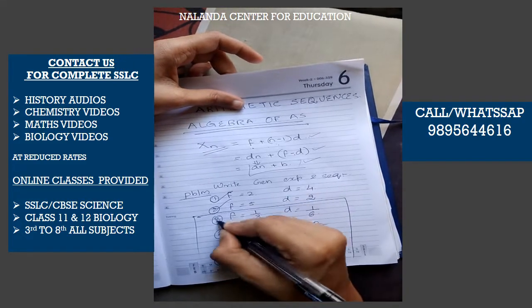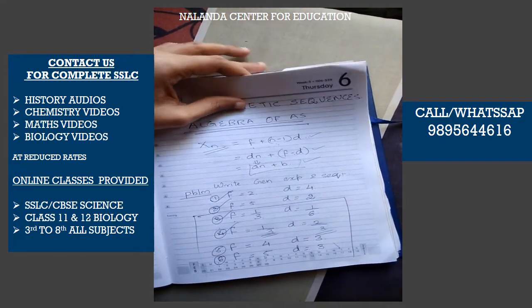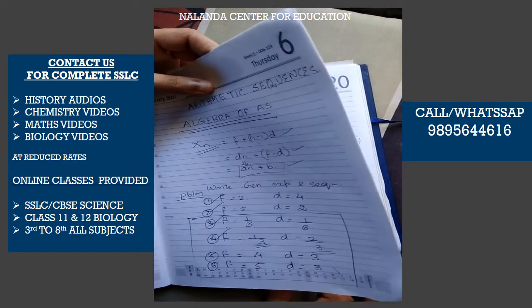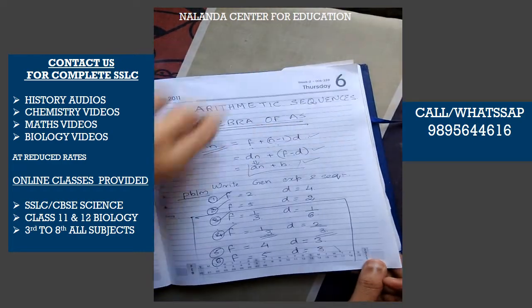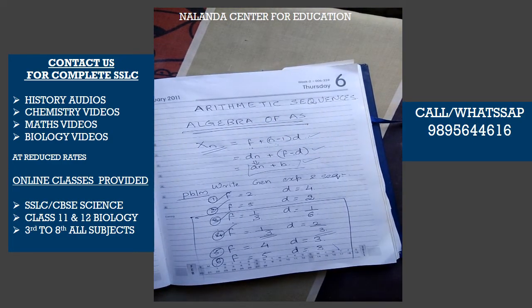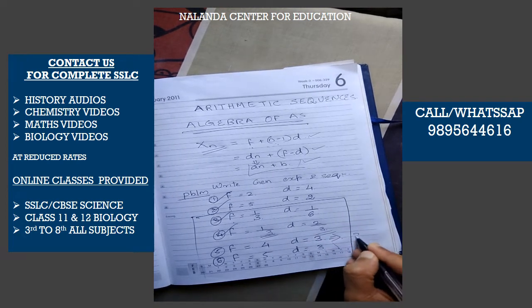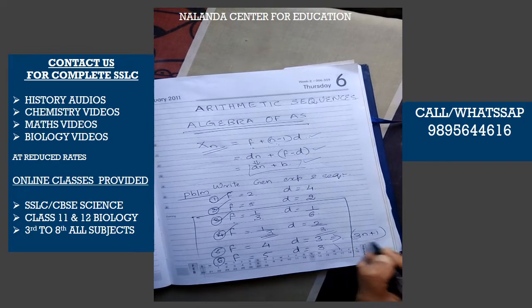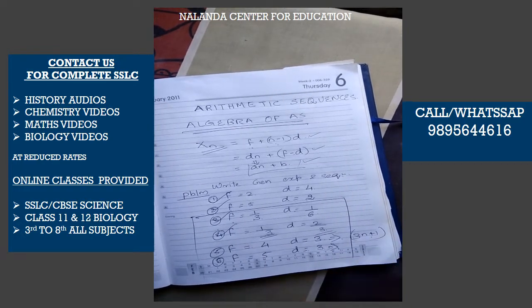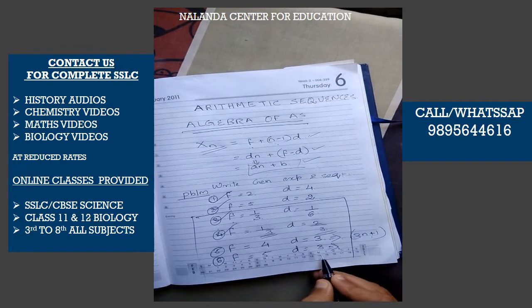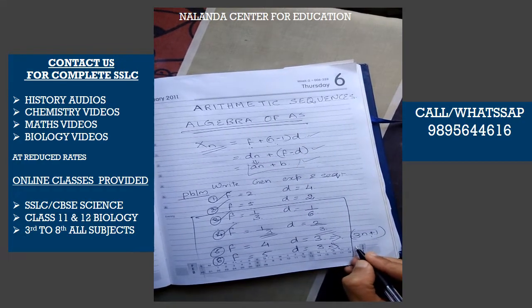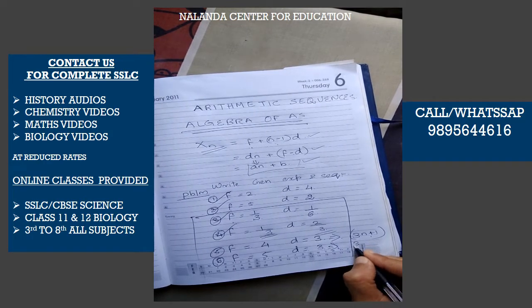Additional examples: first term is 4, common difference is 3 — the algebraic expression is 3n plus 1. First term is 5, common difference is 3 — the algebraic expression is 3n plus 2.